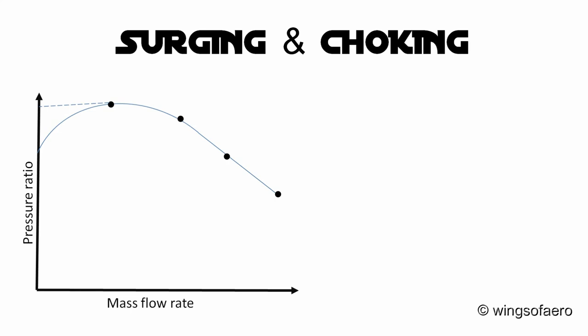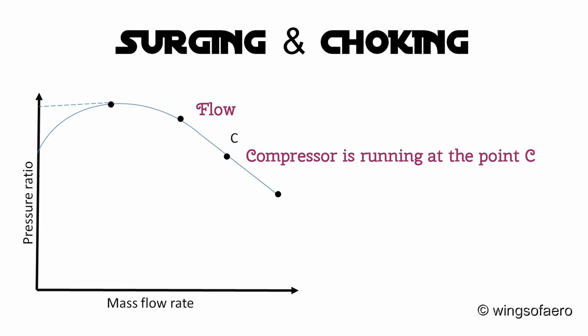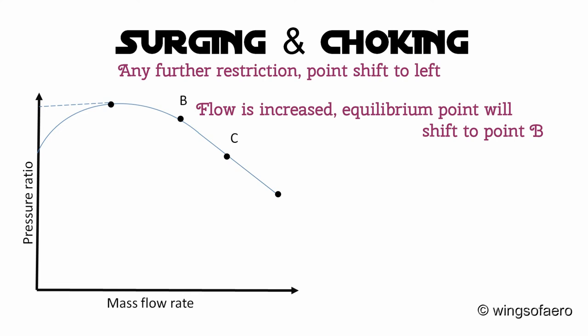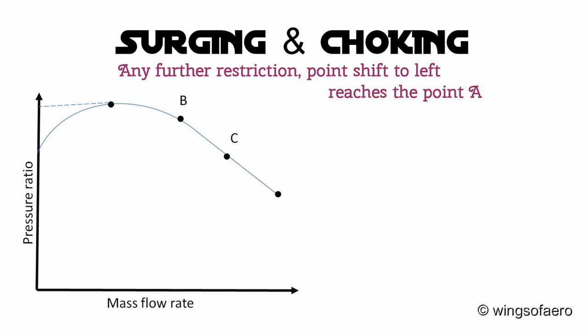Surging and choking: A typical characteristic of the compressor at one particular speed is shown in the figure. Assume the compressor is running at point C. If resistance to flow is increased — for example by closing the delivery valve — the equilibrium point shifts to point B. Any further restriction shifts the operating point further left, ultimately reaching point A, where the maximum pressure ratio is obtained.